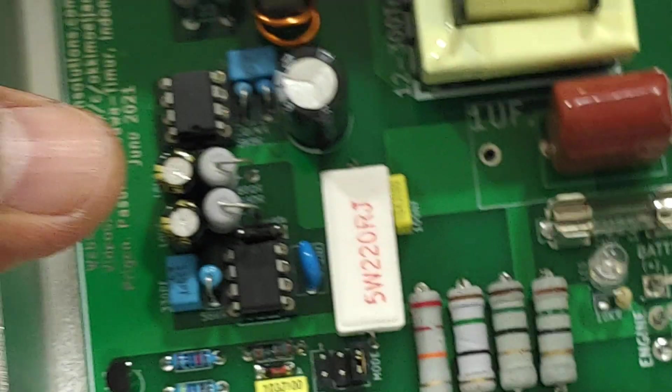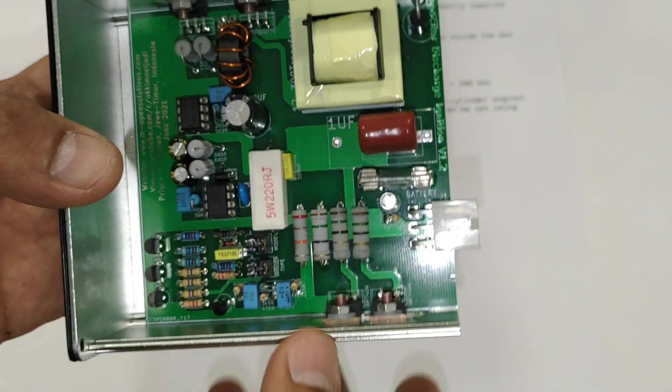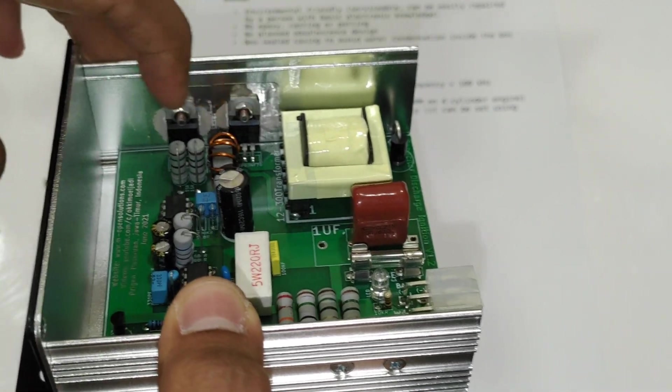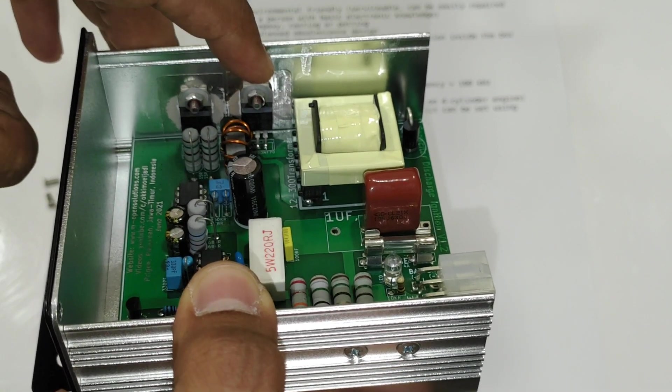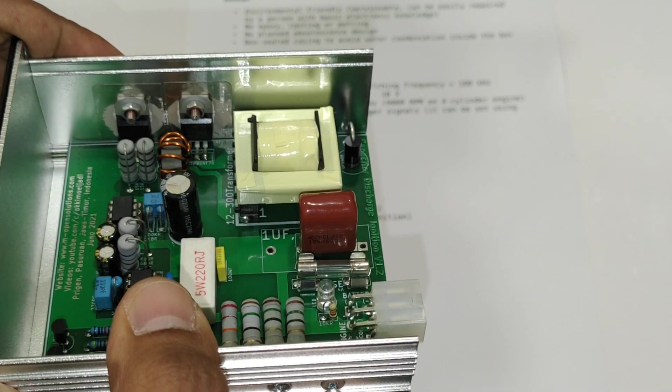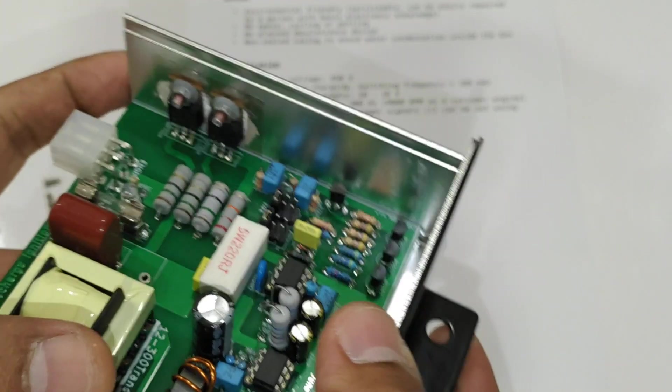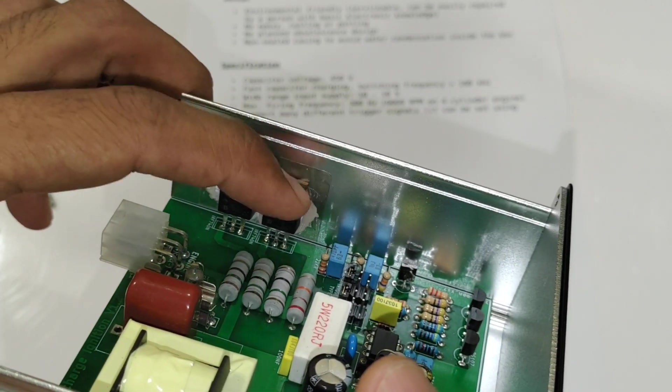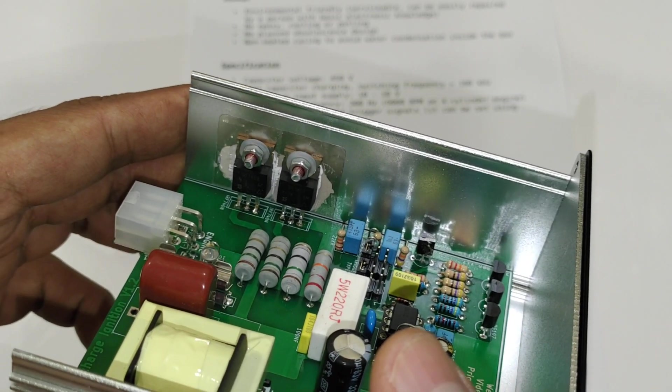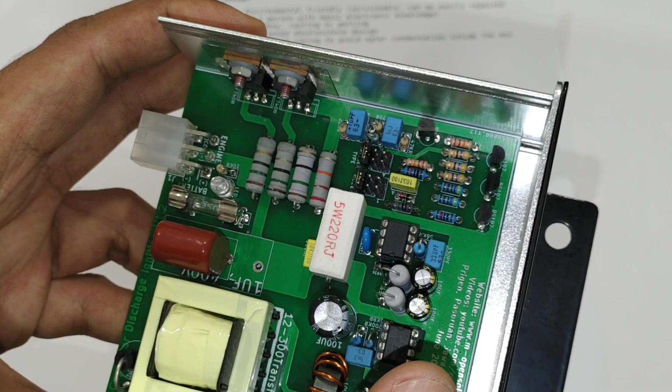Again, I'll show you the CDI from the inside. These are the transistors for driving the transformer, high-frequency transformer. And these are the transistors to ignite the ignition coil or power ignition coil.